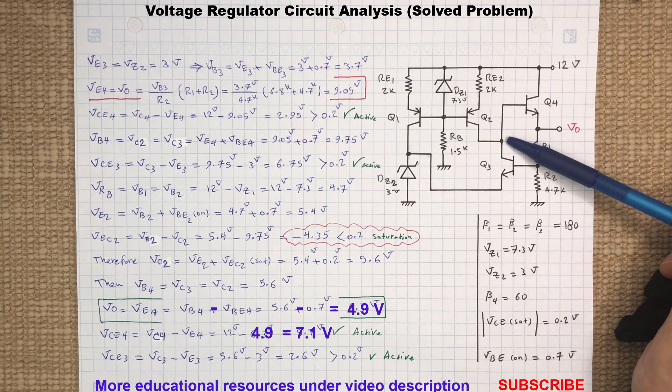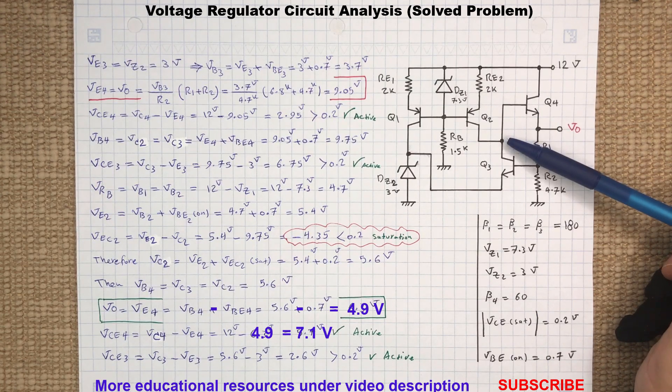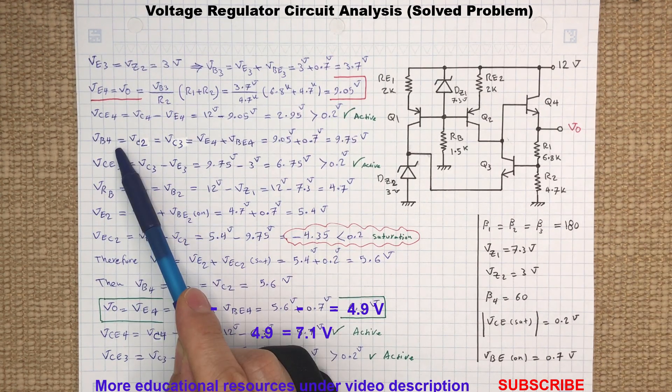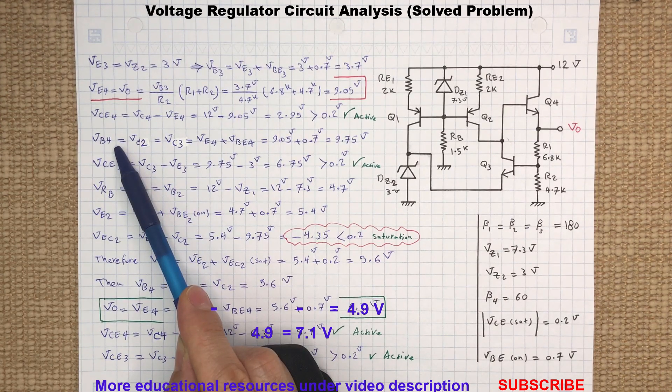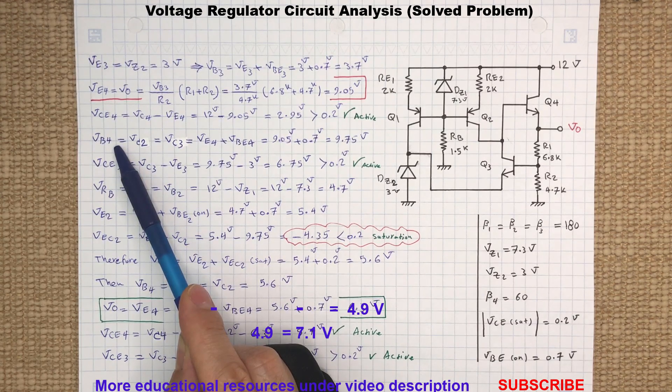Now to verify if Q2 and Q3 are in active region, we first need to calculate the voltage at this node here. So the voltage at the base of Q4 is the voltage at the emitter plus the base-emitter junction voltage VBE4, which results in 9.75 volts.